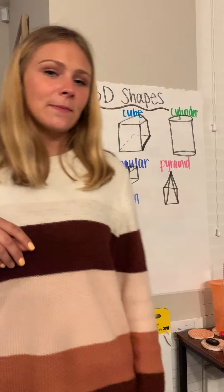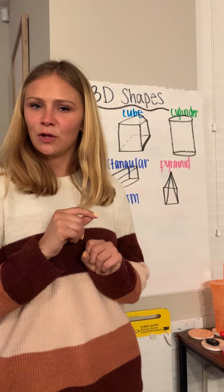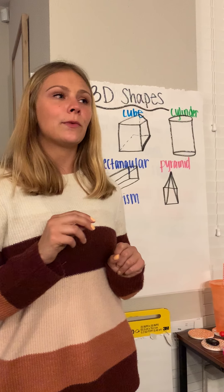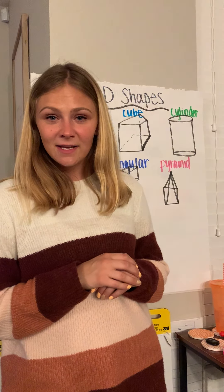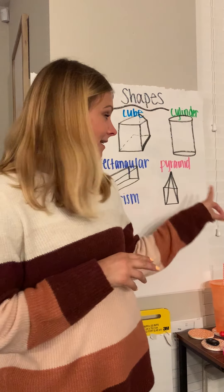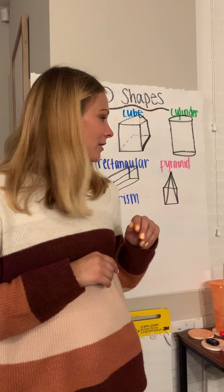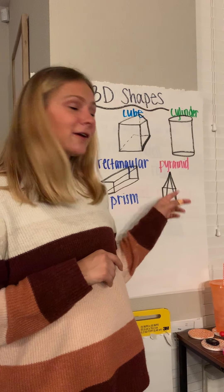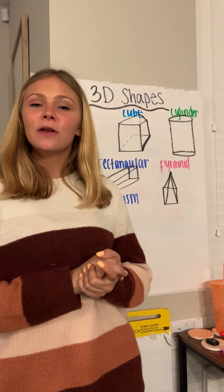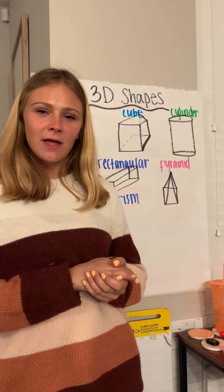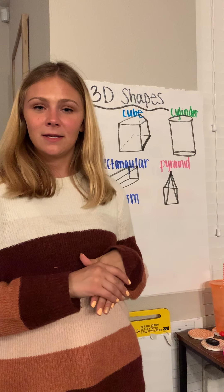Our last 3D shape is one I'm sure you already know the name of, because we learned about it when we learned about Egypt, pharaohs, and tombs — a pyramid. A pyramid has triangles on all the sides, but we know that a triangle is a 2D shape. So our 3D shape is a pyramid.